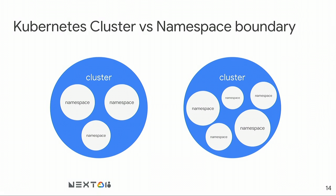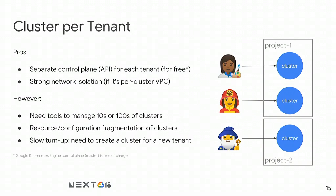Now let's talk about Kubernetes Engine multi-tenancy primitives. If you're already doing multi-tenancy, you're probably segmenting tenants by either creating a separate cluster per tenant or creating a namespace per tenant. In the cluster-per-tenant case, you're creating separate control planes — meaning separate Kubernetes APIs — so anytime you run kubectl get, you hit a separate Kubernetes control plane.